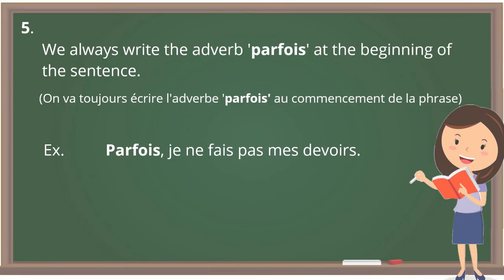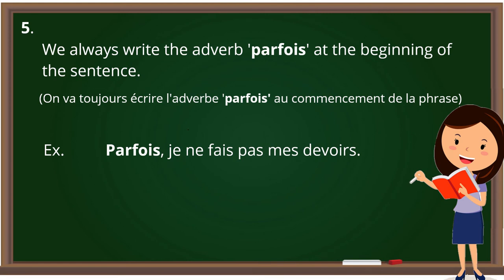Rule number five covers the placement of the adverb 'parfois.' We always write 'parfois' at the beginning of the sentence. For example: 'Parfois, je ne fais pas mes devoirs.'